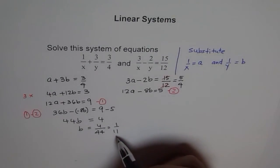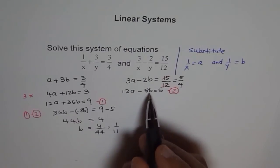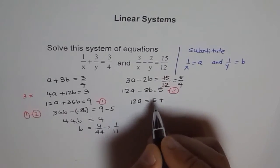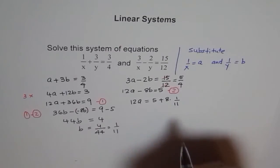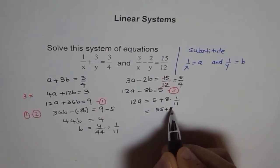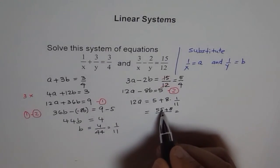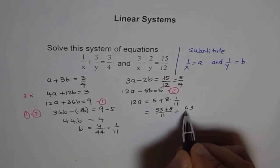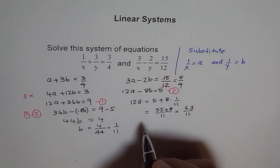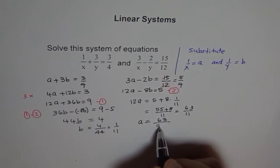Now if B is 1 over 11, we can find what A is from here. So I'll substitute 1 over 11 and try to find what A is. So we get 12A equals 5 plus 8B, so it's 8 times 1 over 11. If we take 11 as common denominator, it becomes 55 plus 8 over 11. So 63 over 11 equals 12A. From here we can say A equals 63 over 11 times 12.